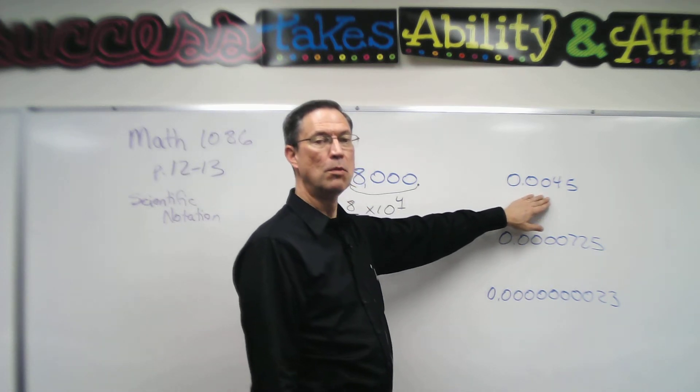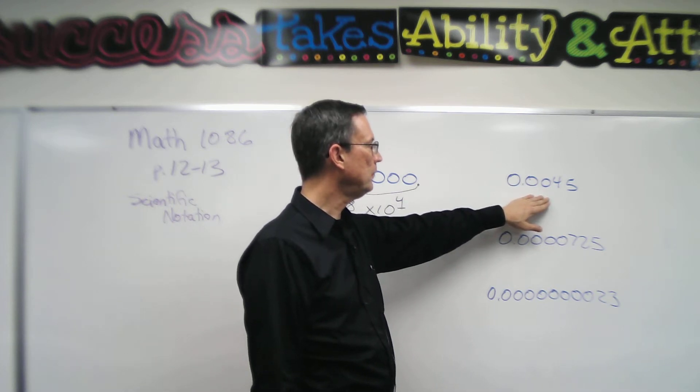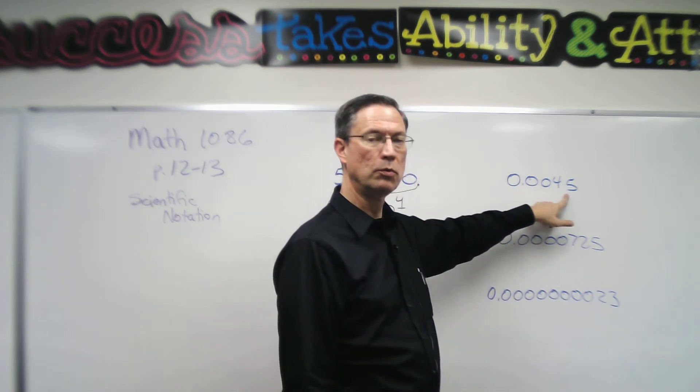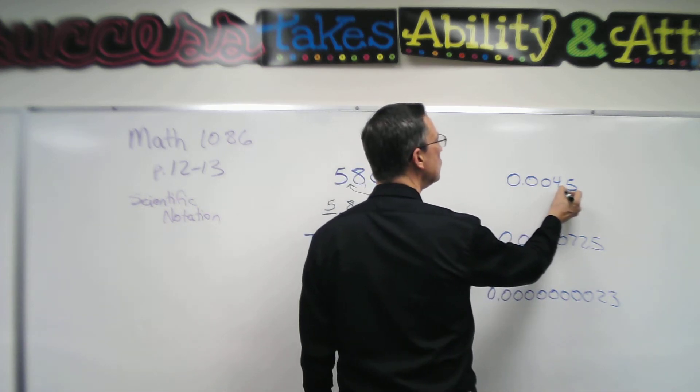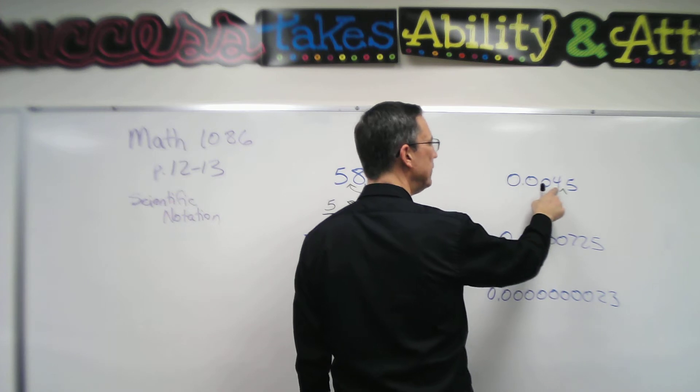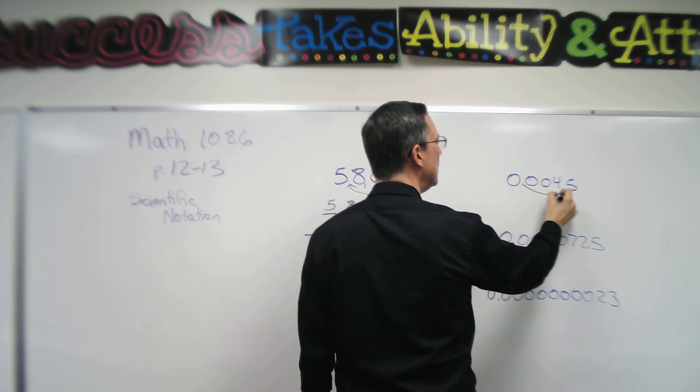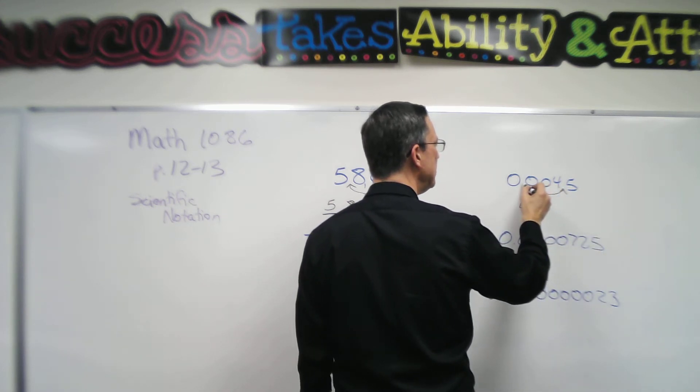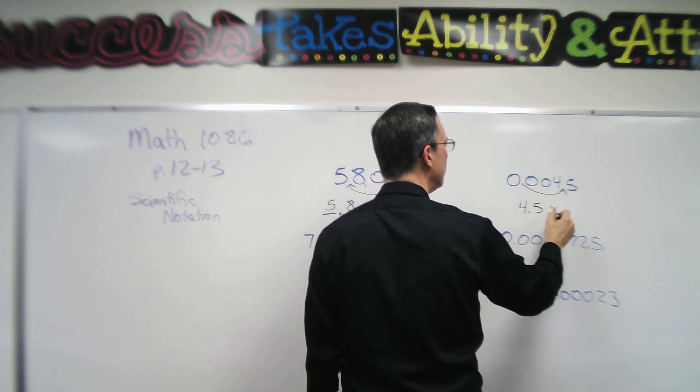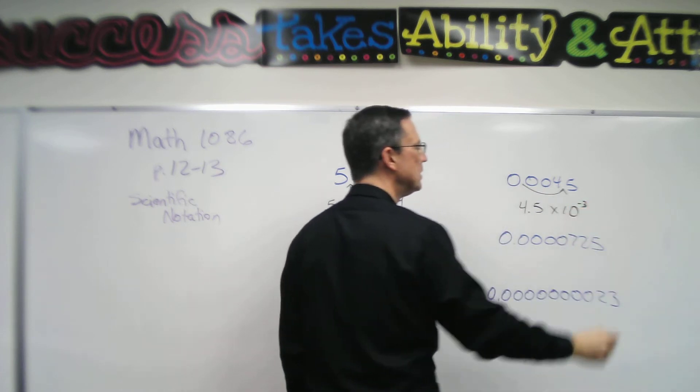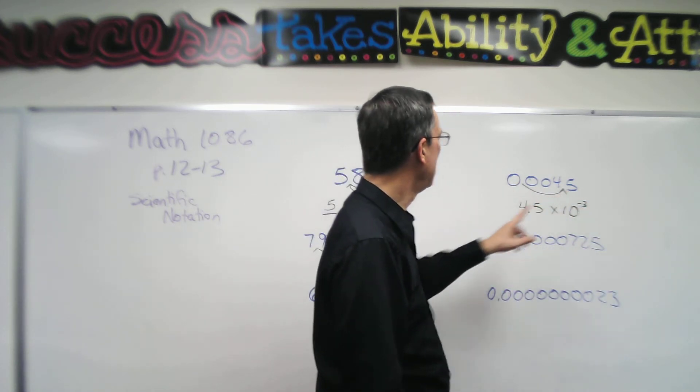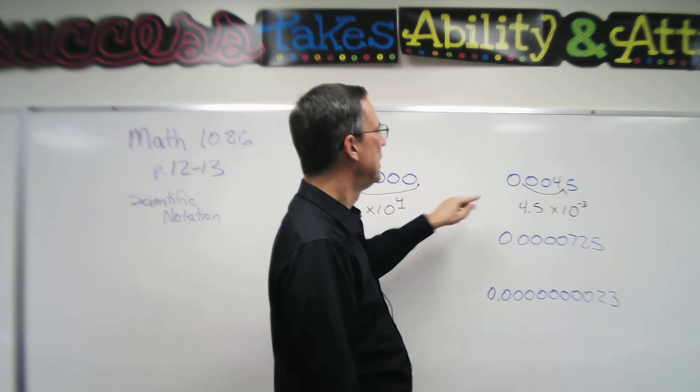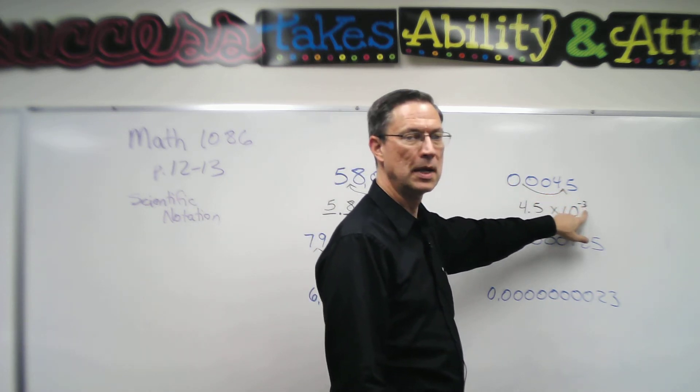Now let's look at these very small numbers. Notice the decimal is present here. I see it, but now instead of moving it to the left, I have to move it to the right, and the rule is the same. It has to move between, or right after the first non-zero digit. So that's going to be 4.5, and how many places did I have to move to get it there? Three places, but I'm going to put a negative in front of it because I'm moving the decimal to the right instead of to the left. Move it to the left we use a positive number. If I have to move it to the right, I use a negative number.